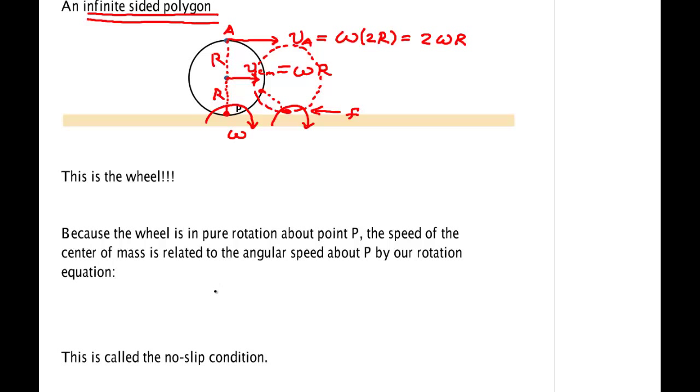The velocity of the center of mass is equal to the angular velocity times r. This condition is called the no-slip condition. So the fact that it rotates and has an omega fixes the speed of the center of this ball or wheel rolling. It can't just have any old value at once. If you speed up omega, you will speed up the speed at which it translates. If you slow down omega, you'll slow down the speed at which it translates.